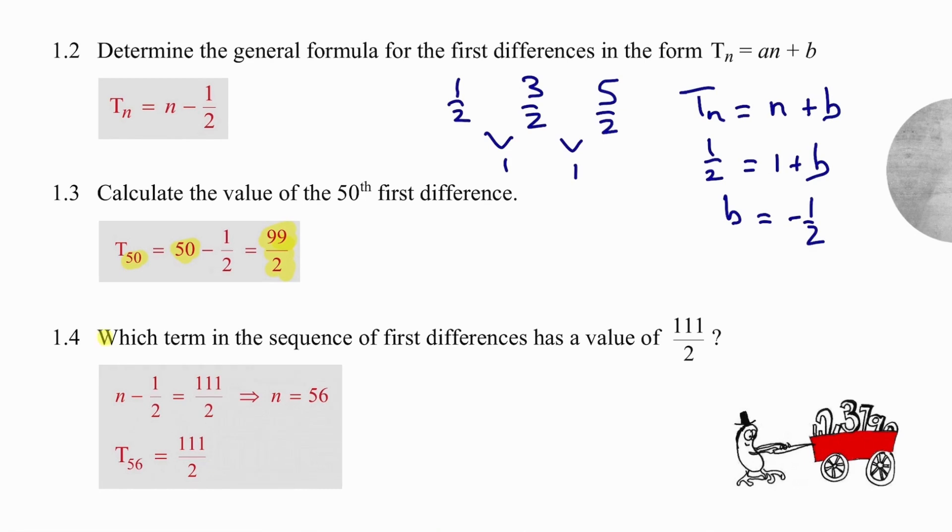The next question asks us which term has a value of 111 over 2. We equate the formula n minus a half with 111 over 2 and work out that n is 56. To answer that correctly, you need to make the last statement and say the 56th term has a value of 111 over 2.